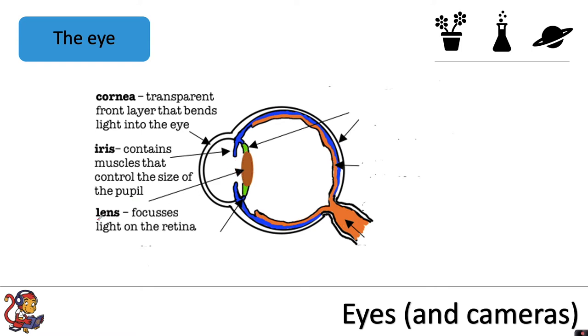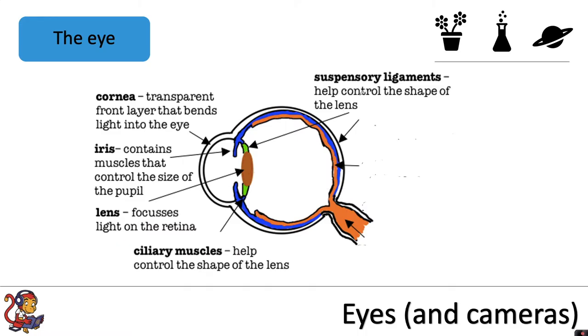The light then hits the lens and the lens focuses the light on the retina which is this part of the back of the eye. Ciliary muscles along with suspensory ligaments help control the shape of the lens.